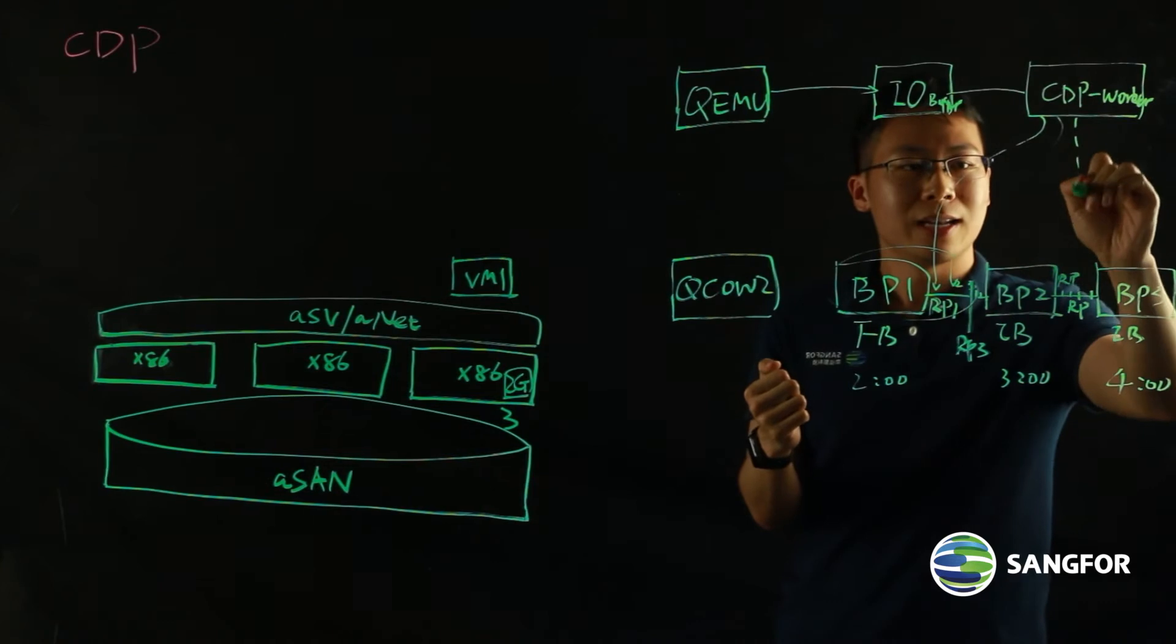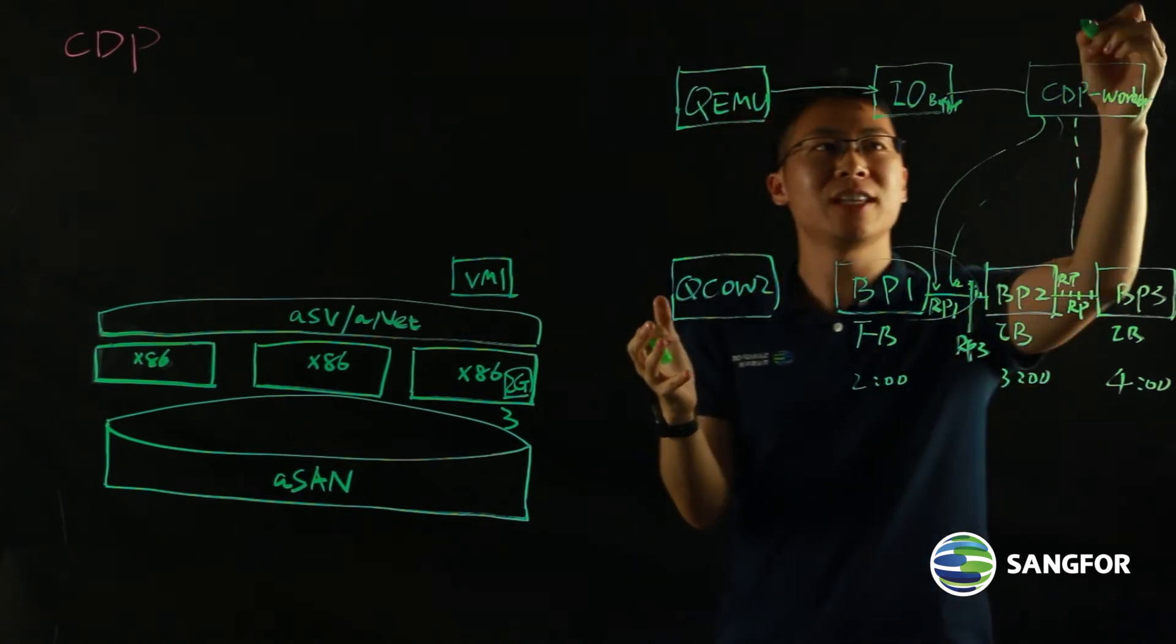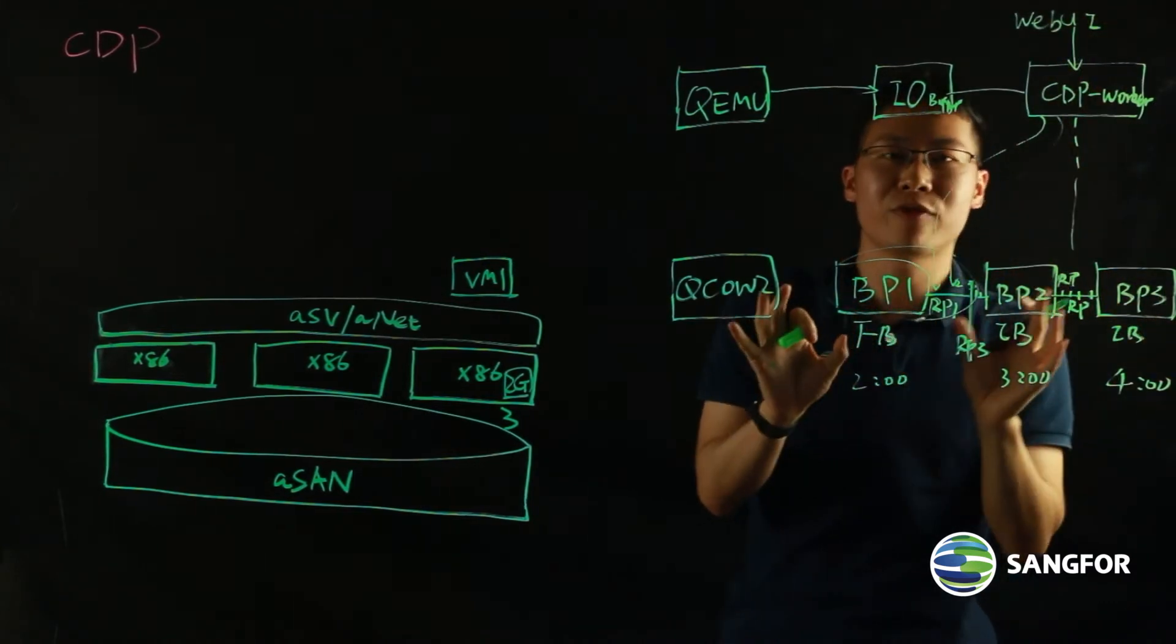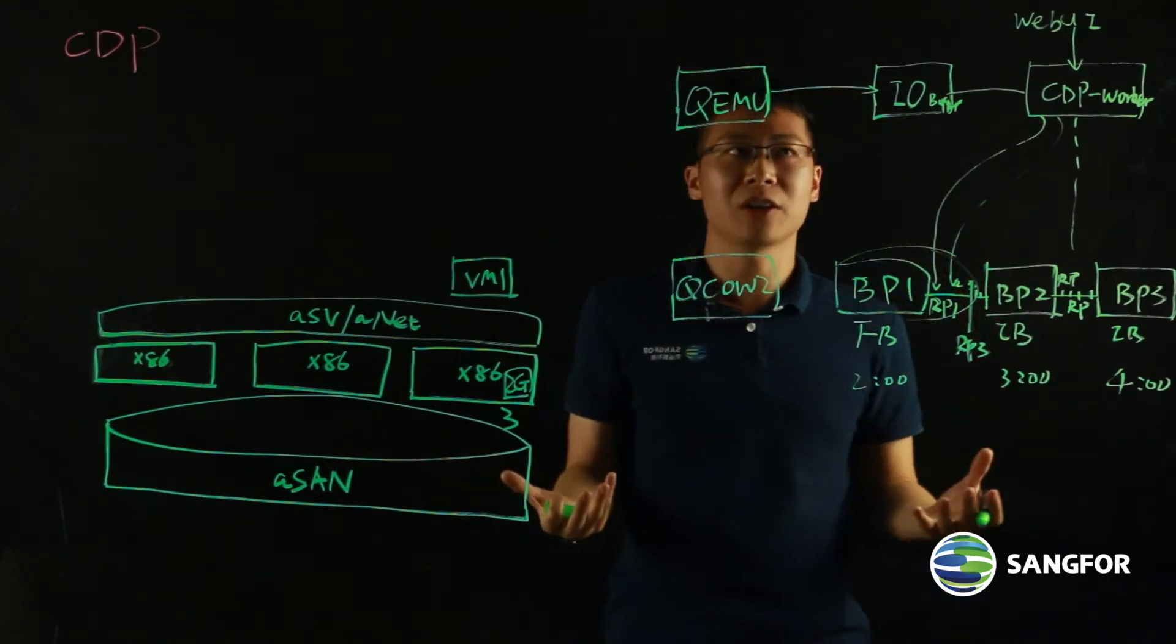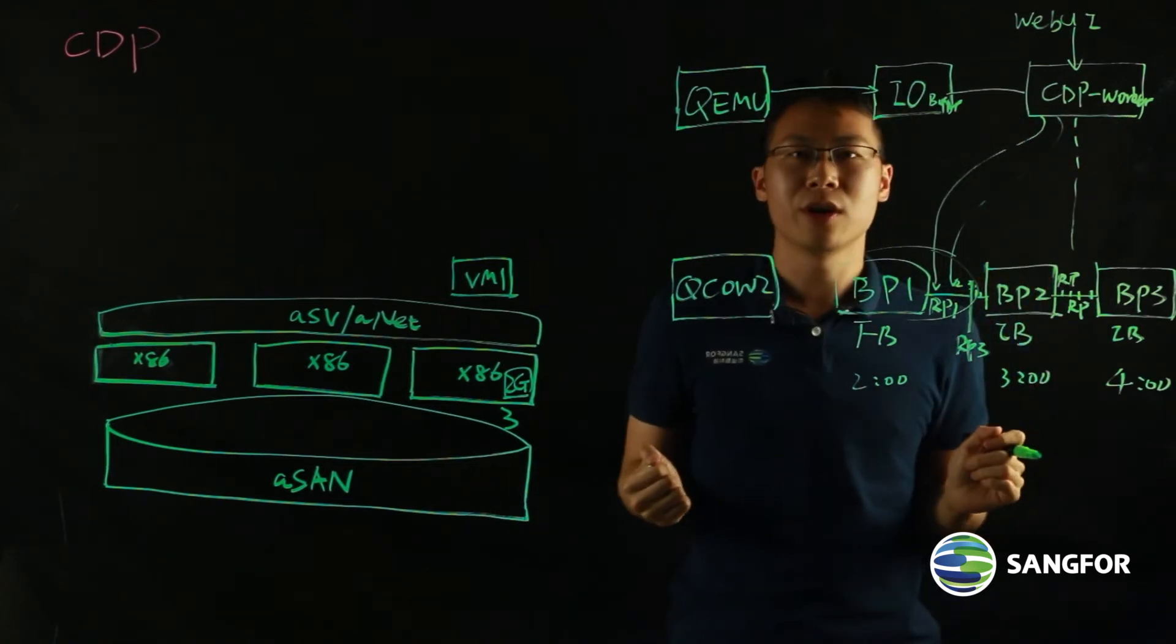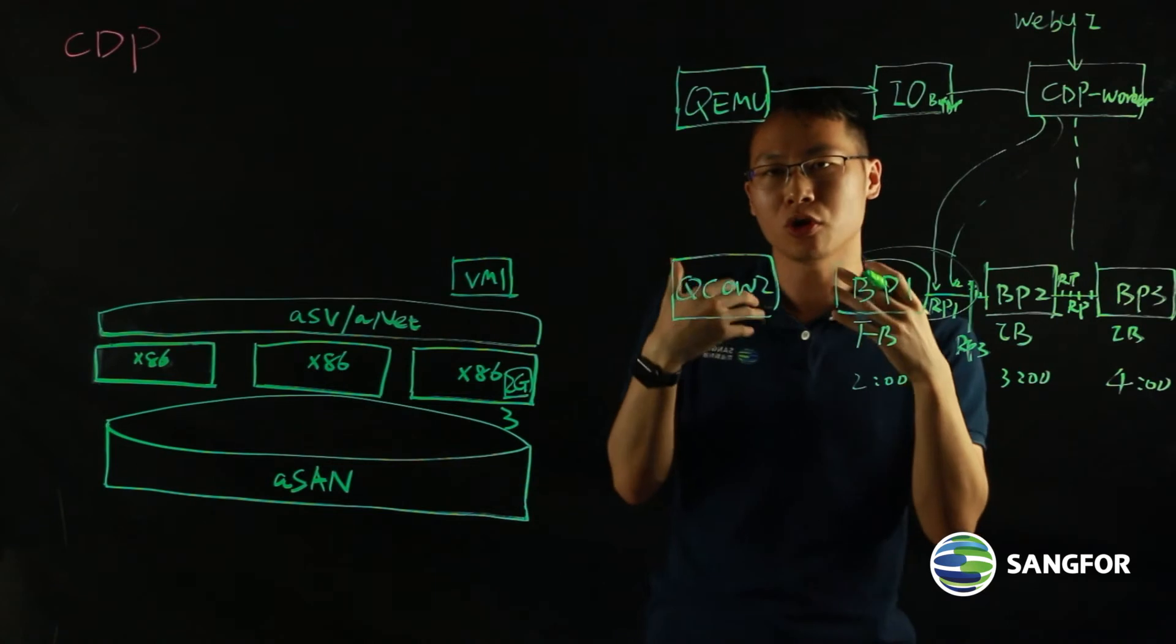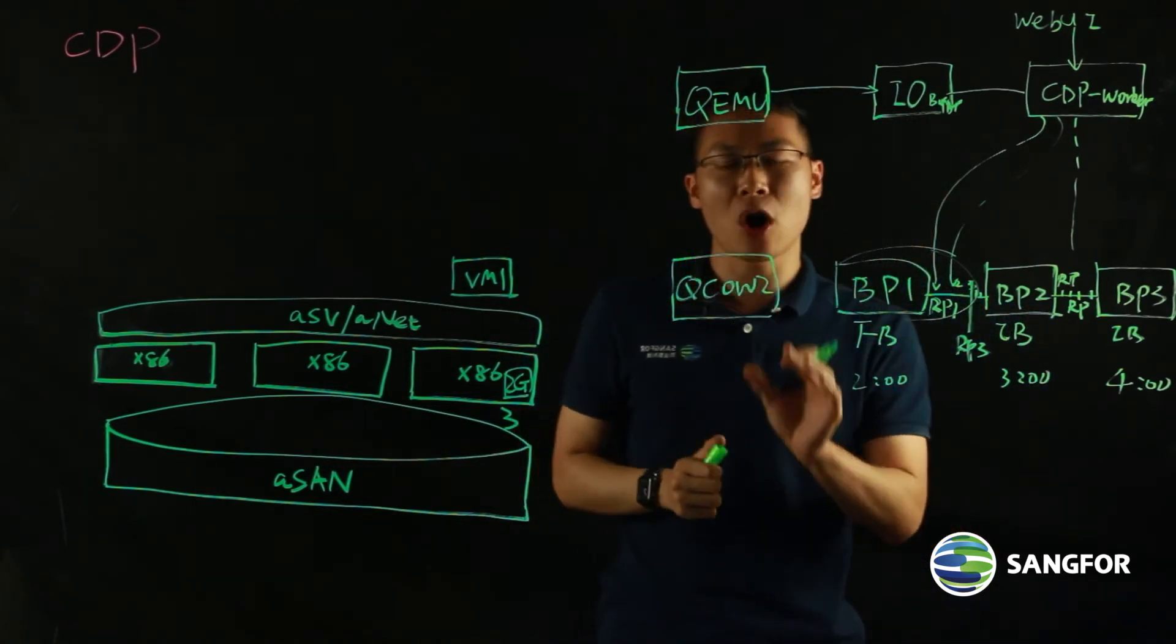And like I said, the CDP worker is the brain of our CDP strategy. And this CDP worker is initiated, is commanded by the web UI. We have a very intuitive web UI, so customers can create a CDP policy. And after that CDP policy is activated, the CDP worker will become in effect. And then it will distribute all the IOs based on your policy, based on your CDP policy.